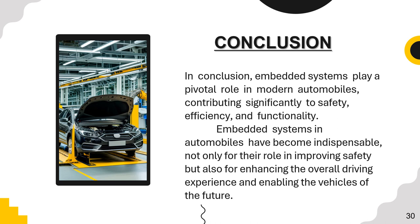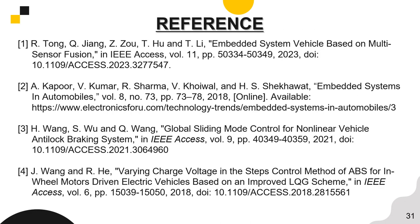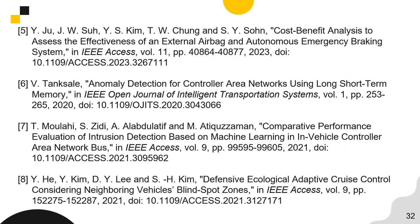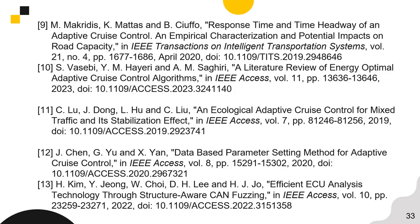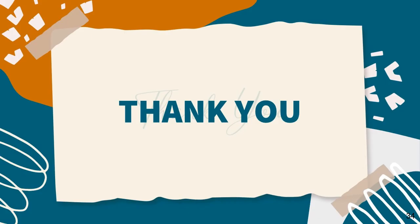In conclusion, embedded systems play a pivotal role in modern automobiles, contributing significantly to safety, efficiency, and functionality. Embedded systems in automobiles have become indispensable, not only for improving safety but also for enhancing the overall driving experience and enabling the vehicle's future. These are the references used. Thank you.